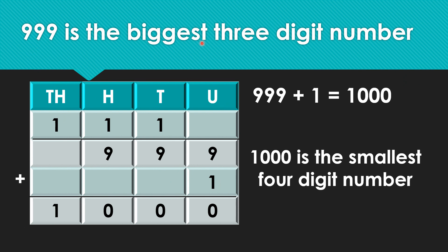999 is the biggest 3-digit number. Now let us add 1 to 999. Let us add the units place numbers first. 9 plus 1, we get 10. We write 0 in the units place, and 1 is carried over. 1 plus 9, we get again 10. So we write 0 in the 10th place, and 1 is carried over.